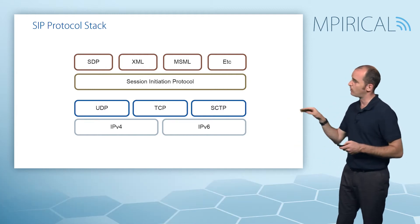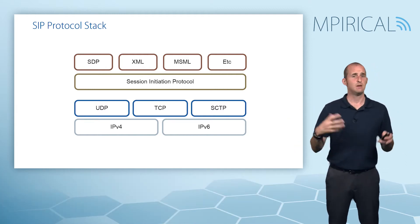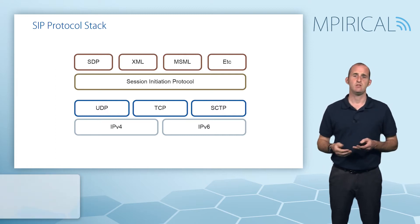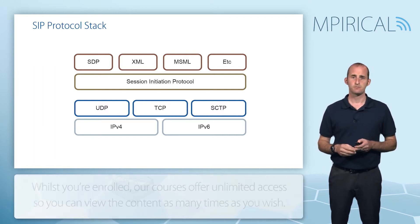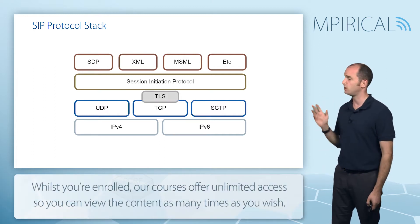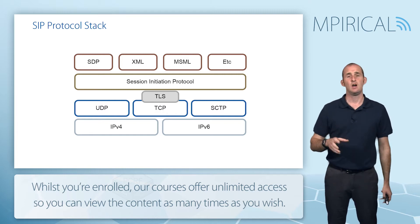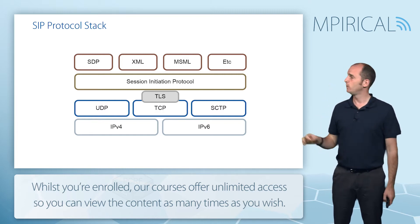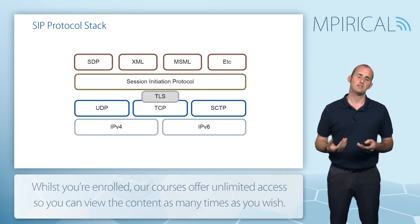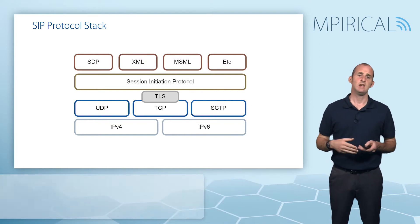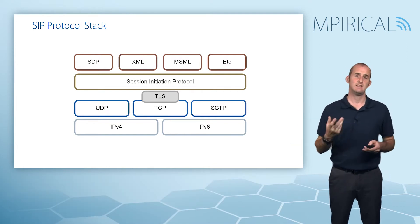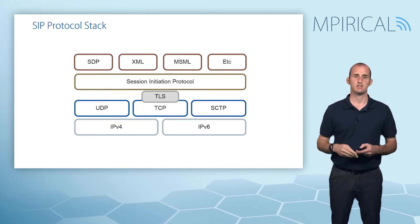At the bottom of the stack it might be IPv4, or it could just as well be IPv6. There is a variety of SIP called SIP Secure, which is just vanilla SIP with the addition of Transport Layer Security in the protocol stack, which means we have to use TCP at the transport layer.